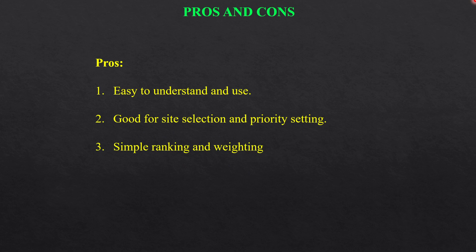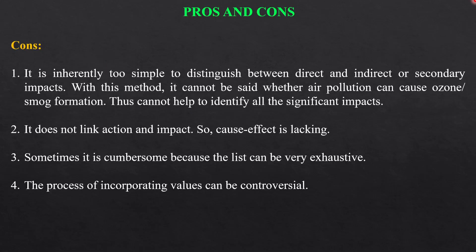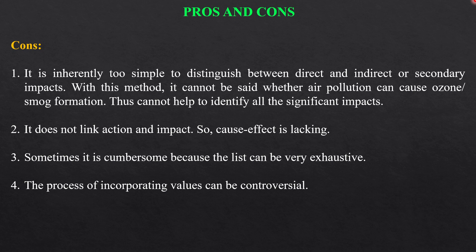The pros of the checklist method are that it is easy to understand, good for site selection and priority setting, and allows simple ranking and weighting. The cons are that it is inherently too simple to distinguish between direct, indirect, or secondary impacts. For instance, it cannot determine whether air pollution can cause ozone or smog formation, so it cannot help identify all significant impacts, does not show cause-effect linkage between action and impact, and can be cumbersome if the list is exhaustive. The process of incorporating weightage values is also controversial as they may vary from expert to expert.